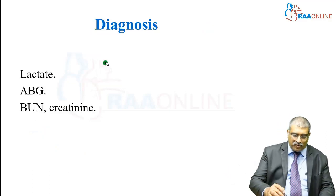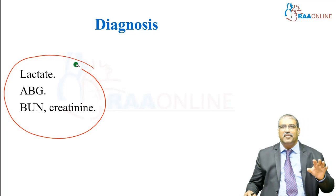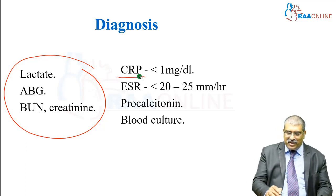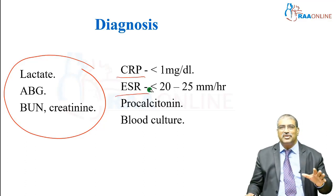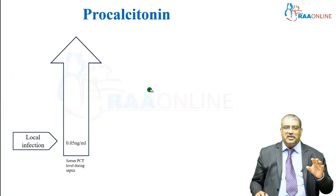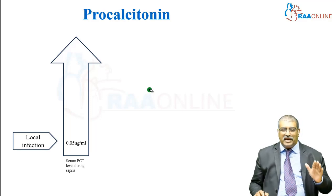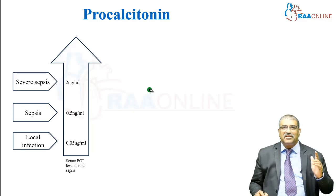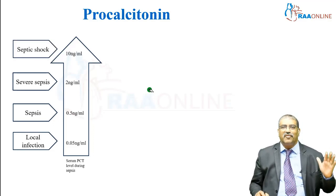For diagnosis of usual shock, you go ahead with lactate, ABG, and BUN creatinine. But with regard to sepsis, there are certain biomarkers we look at: CRP, erythrocyte sedimentation rate, procalcitonin, and blood culture. With regard to procalcitonin: if it is around 0.05 nanogram per ml, it is a local infection; if it is 0.5 nanogram per ml, it is sepsis; if it is 2 nanogram per ml, it is severe sepsis; and it is septic shock when it is greater than 10 nanogram per ml.